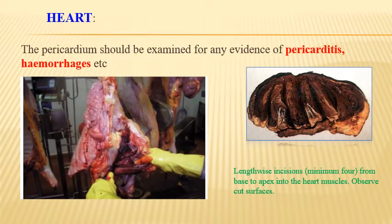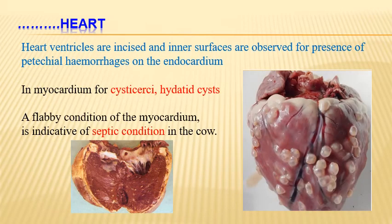Inspection of heart: the pericardium should be examined for any evidence of pericarditis or hemorrhages. Then the heart should be incised with lengthwise incisions — minimum four, from base to apex into the heart muscles — and the cut surfaces observed. Heart ventricles are incised and inner surfaces are observed for presence of petechial hemorrhages on the endocardium, and in the myocardium for cystic or hydatid cysts. A flabby condition of the myocardium is indicative of a septic condition in the cow.